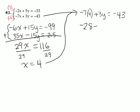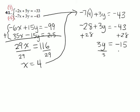Well, negative 7 times 4 is negative 28. Add 28 to both sides of the equation. That's going to give us 3y is equal to negative 15. And then divide both sides of the equation by 3. And we get that y is negative 5.